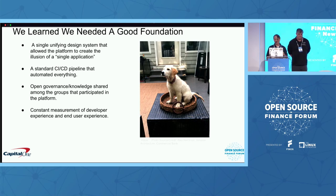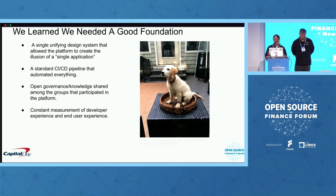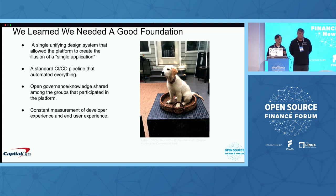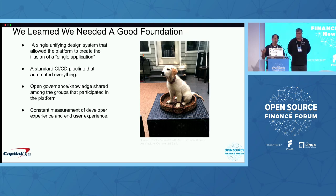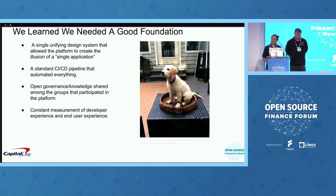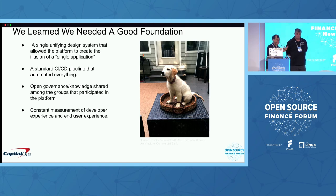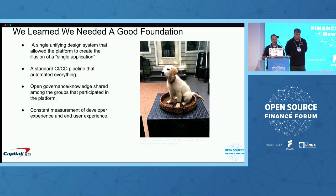Foundational here as well is a CI/CD pipeline — if you don't have one, I highly recommend you get one. In our case, what we do with micro front-ends as well as back-end services is we have a standard pipeline with linting, builds, and all the security checks baked in. Everybody deploys their piece but uses that pipeline, so we have that standardization to help free up innovation.